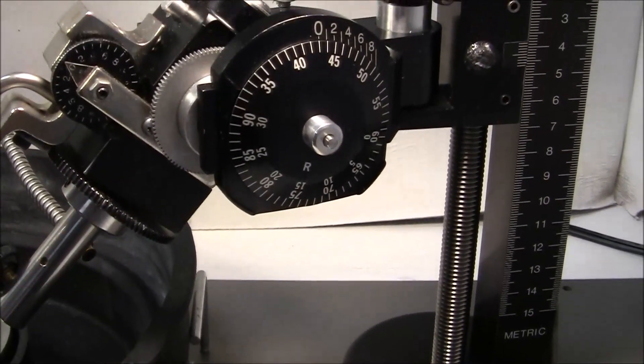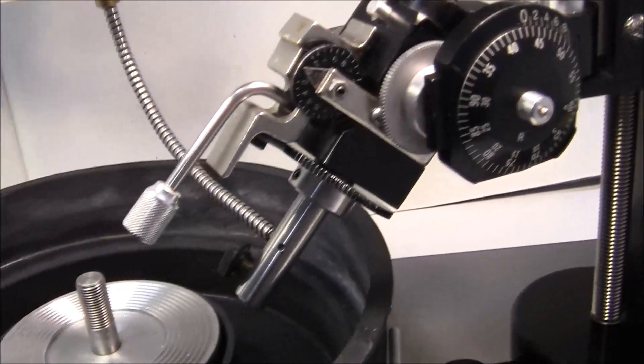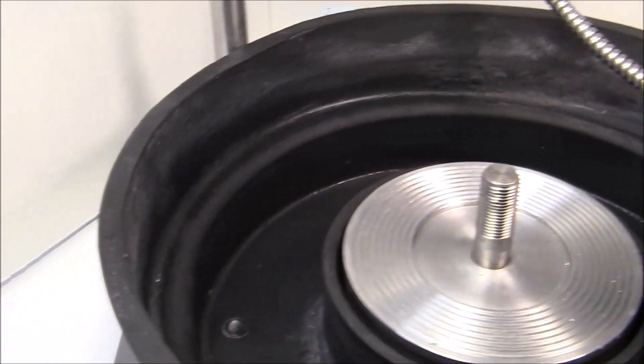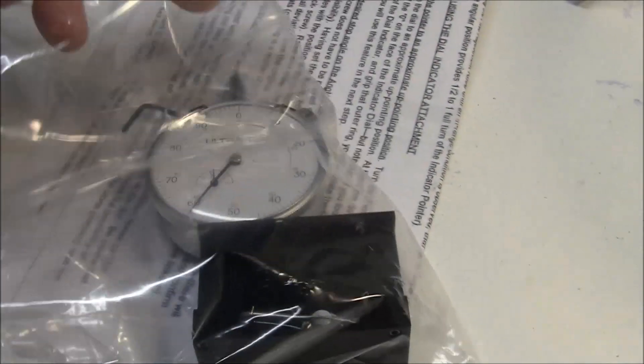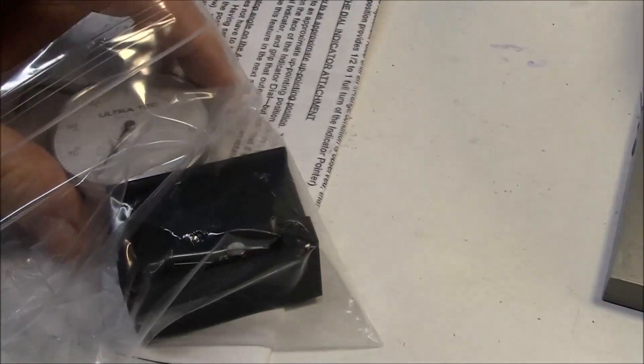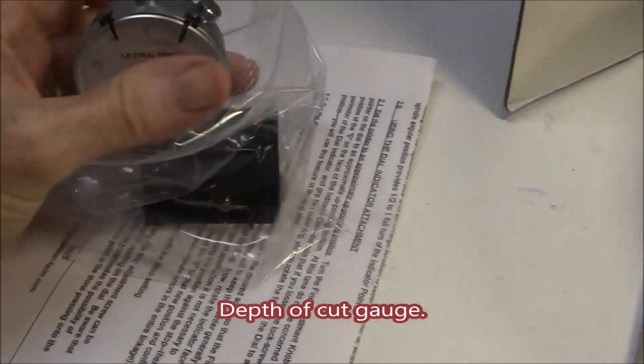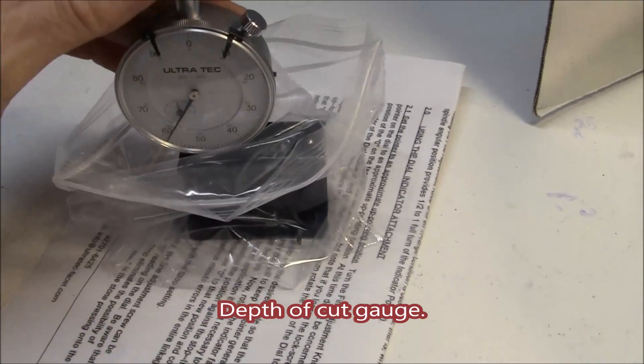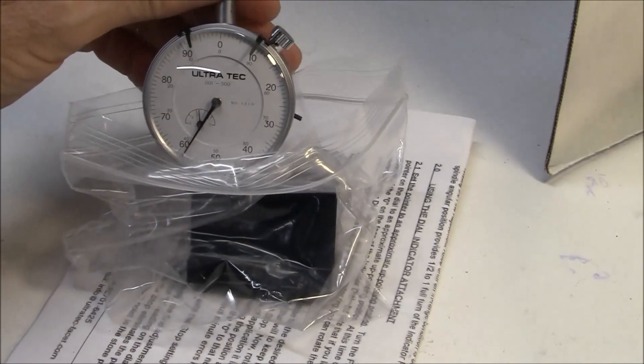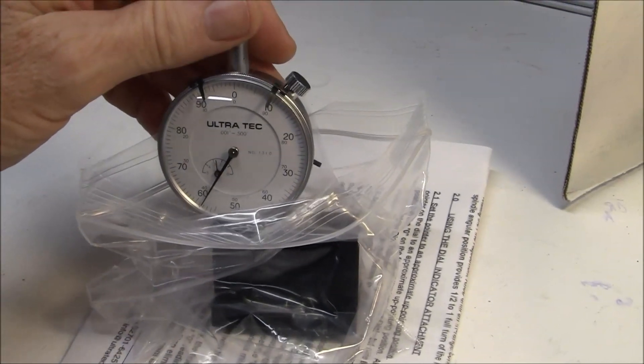So what I'm going to do today is put on an Ultratech down indicating gauge. And this is supposed to mount very easily on the machine.